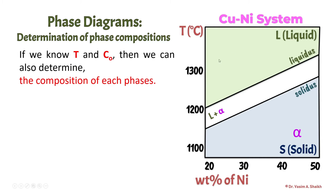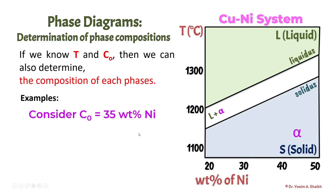It is simple when we are in a one-phase field, like when we are in liquid or solid, but it becomes slightly complicated when we are in the liquid and alpha phase. We will quickly see the single-phase cases first, then come to the main point of determining phase composition in the two-phase field. We will start by considering an original composition — CO, which is the overall composition — and we are taking that as 35 weight percent of nickel. We just draw a vertical line from that point.